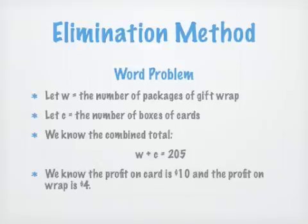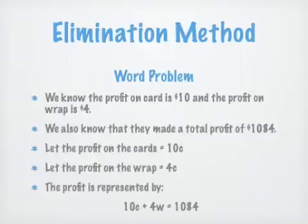We also have the profits. The profits were $10 for the box of cards and $4 on a package of wrap. We also know we made $1,084 total. Let the profit on the cards be 10C and the profit on the wrap be 4W. The total is 10C plus 4W equals 1084.